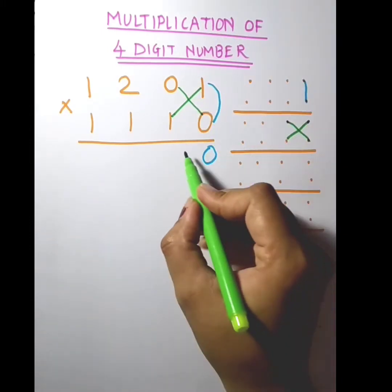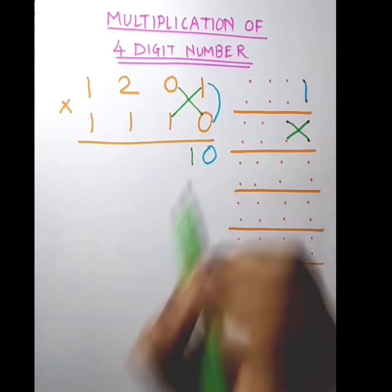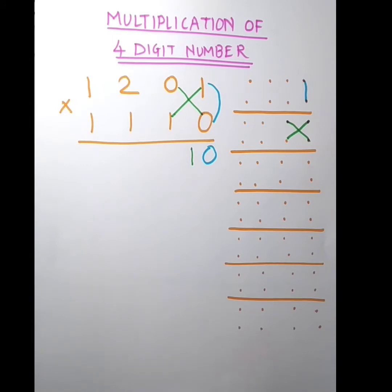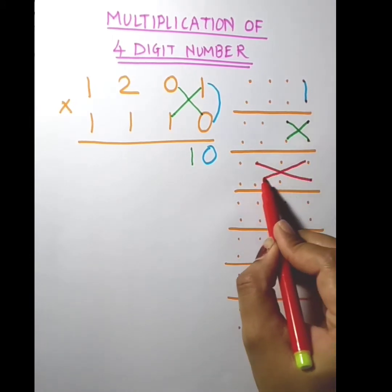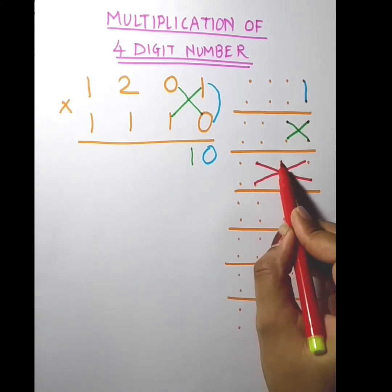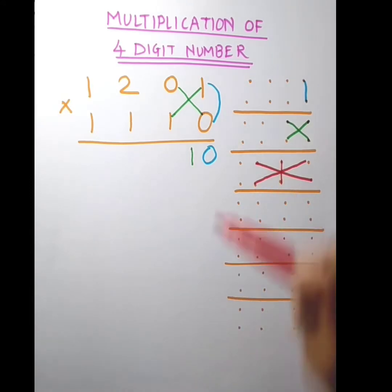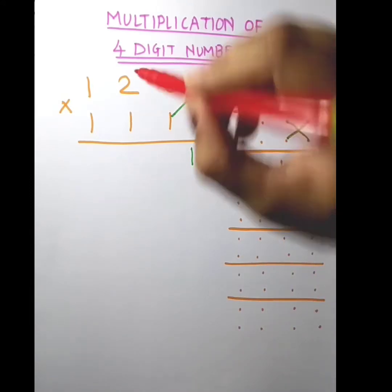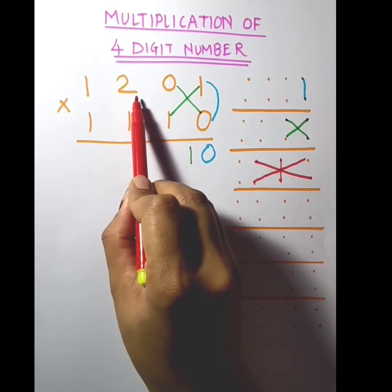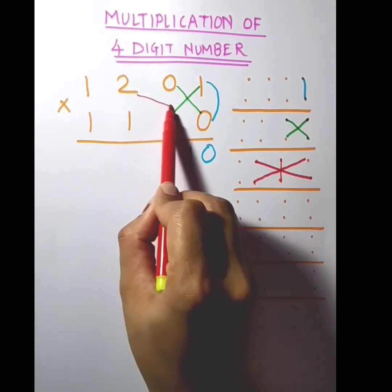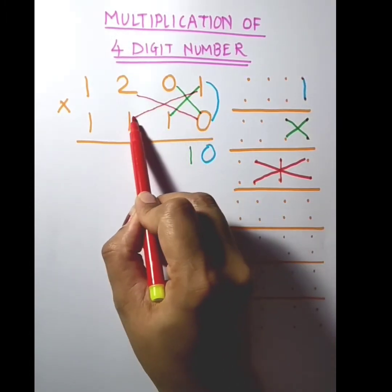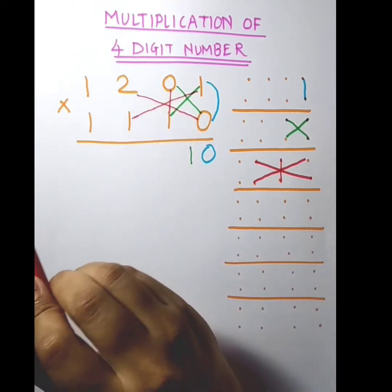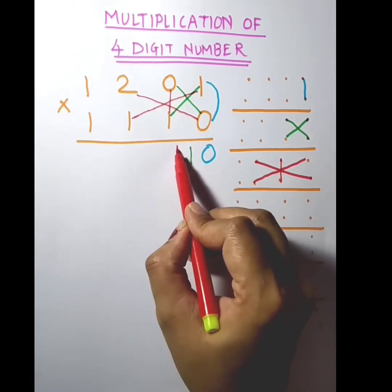So your answer will be 1. Now this into this, this into this, plus this into this. Here I take 2 into 0, it's 0; 1 into 1 is 1; and 1 into 0 is 0. So again the result is 1.